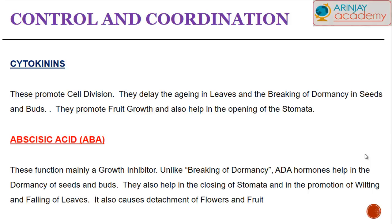The abscisic acid, or ABA, are growth inhibitors. Unlike the other hormones which promote breaking of dormancy, ABA hormones help in maintaining the dormancy of seeds and buds — keeping the seed sleeping or dormant. Similarly, they help in the closing of the stomata, and they promote wilting and the falling off of leaves. ABA also causes the detachment of flowers and fruits.